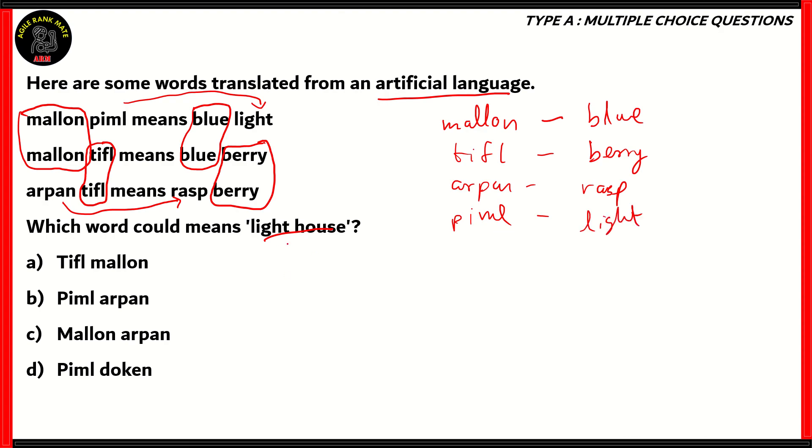Now we need to find the word that could mean lighthouse. So whatever word is the answer should have the word pimple in it, since it means light. Therefore among the four options, we should have the word pimple in the right answer. If you look at the options, options A and C are incorrect because they do not have the word pimple, which means light. Options B and D both have the word pimple. Option B is pimple arpen, and option D is pimple doken.